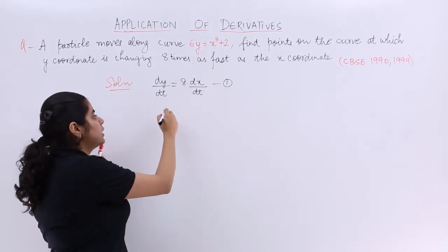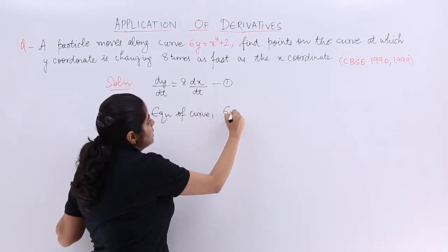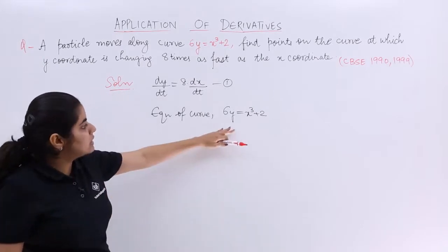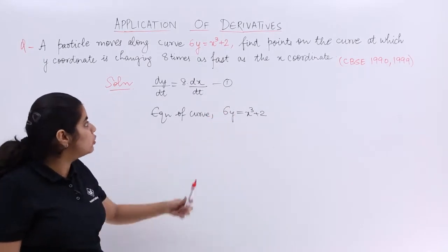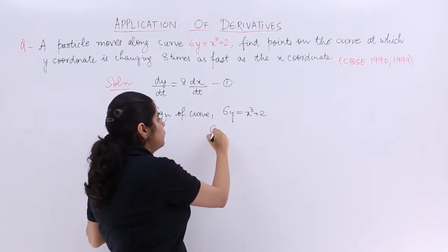What about the equation of the curve? Equation of the curve is nothing but 6y equals x cubed plus 2. Now since this is the curve given to you and you have to use this knowledge to find out the points, so for finding the points, we have to differentiate.